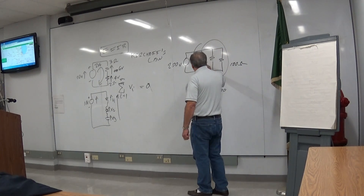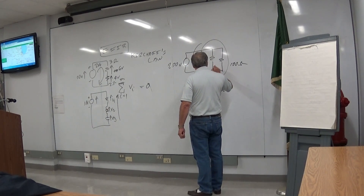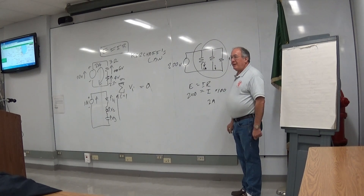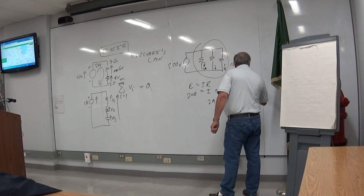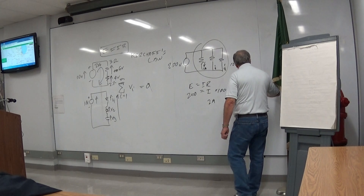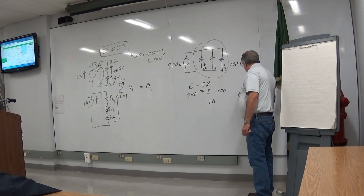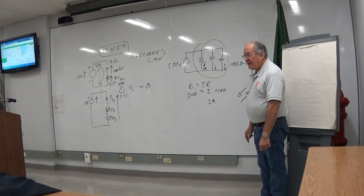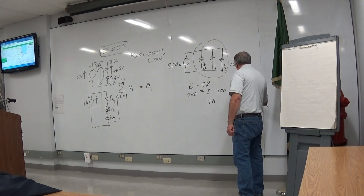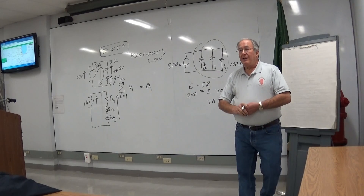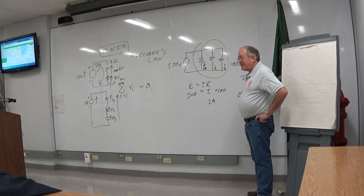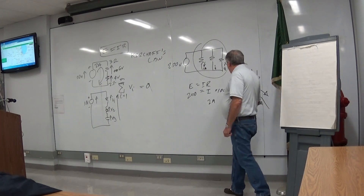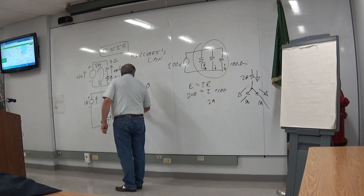If it's two amps total and I know there's one amp going through one branch and half an amp going through another branch, what does the third branch have to be? It's going to be another half amp — because here is Kirchhoff's current law: all the current flowing into a node has to equal the current flowing out of the node. It cannot accumulate anything in the node. So if you've got two amps going in and you've got one amp and one amp flowing out, they add to zero.